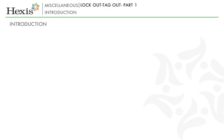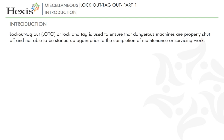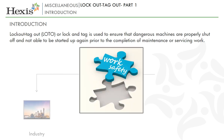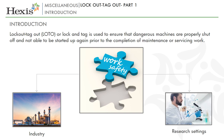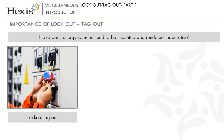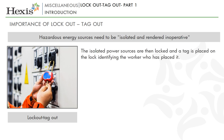Let us start this module by defining what is Lockout Tagout. Lockout Tagout, or LOTO, or lock and tag, is a safety procedure used in industry and research settings to ensure that dangerous machines are properly shut off and not able to be started up again prior to the completion of maintenance or servicing work. Hazardous energy sources need to be isolated and rendered inoperative before work is started. The isolated power sources are then locked and a tag is placed on the lock to identify the worker who has placed it.